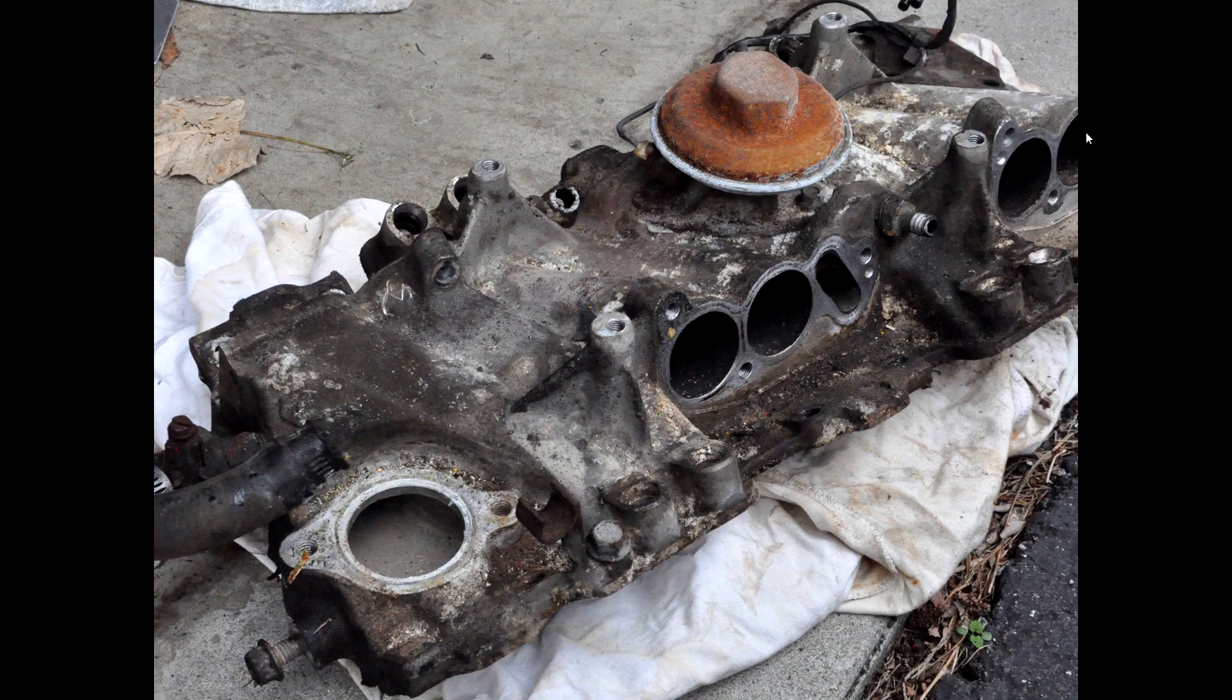The runners attach to these ports and you can see the outline on the casting. The air comes down from the plenum above through this port, feeds across to the other side, and here's where the injector is for the cylinder on the opposite side. That's the airflow path across.